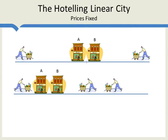Firm A might decide to move to the right of firm B, in which case A gets more than half the market and B gets less. Following this logic through, the only position of stability — the only position in which neither A nor B can make themselves better off by a unilateral move — is where they choose to locate exactly in the middle. If A were to move to the right of B, A would get less than half the market. Neither A nor B want to move given that both are in the middle. This is called a Nash equilibrium: when neither player can improve their payoffs by a unilateral move, after the famous economist John Nash.